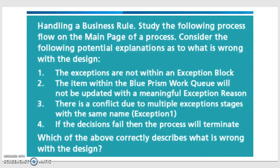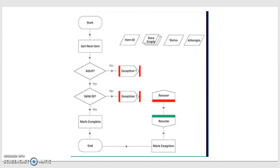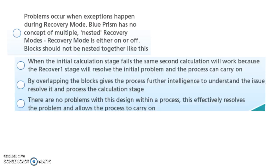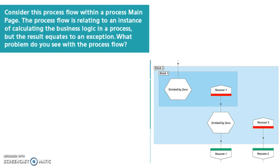Okay, we can move to the next question. Here you can see a process flow diagram. Blue Prism does not accept nested loops. What is wrong with this flow is the nested loops. The problem is the exception happens in Blue Prism recovery mode. Blue Prism has no concept of multiple nested recovery modes — recovery mode is either on or off. Blocks should not be nested together like this — a block inside another block is not possible in Blue Prism.